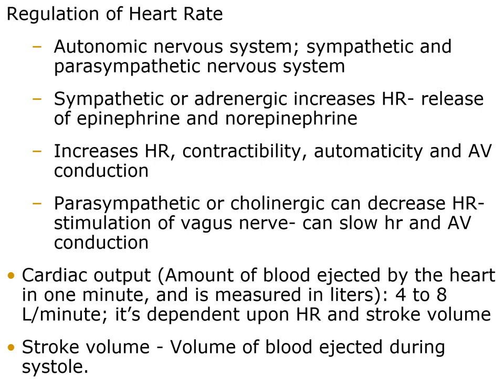The autonomic nervous system influences regulation of the heart rate through the sympathetic and parasympathetic nervous systems. The sympathetic or adrenergic system can increase the heart rate by releasing epinephrine and norepinephrine, which increase heart rate, contractibility, automaticity, and AV conduction. The parasympathetic or cholinergic nervous system can decrease the heart rate. The vagus nerve, when stimulated, can slow heart rate and AV conduction. Cardiac output is the amount of blood ejected by the heart in one minute, measured in liters. Normal cardiac output is between four and eight liters per minute, and it is dependent upon both heart rate and stroke volume — the volume of blood ejected during systole.